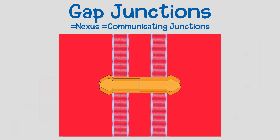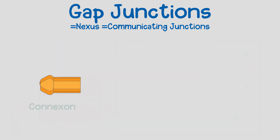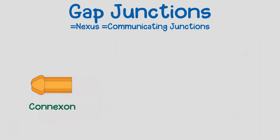Now let's talk about the structure of gap junctions. Gap junctions are made of two half channels called connexons. Each cell contributes one connexon to the gap junction. Each connexon is made of six protein subunits called connexin. Each connexon is integrated within the cell membrane and stretches from the cytoplasm to the extracellular space.